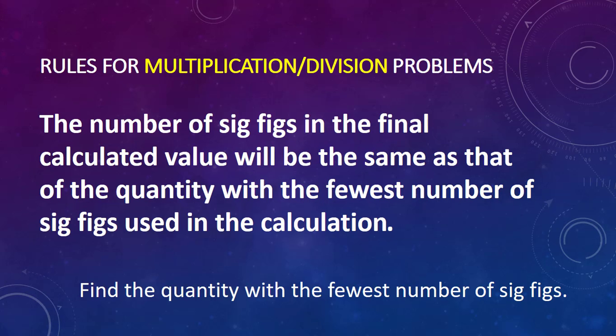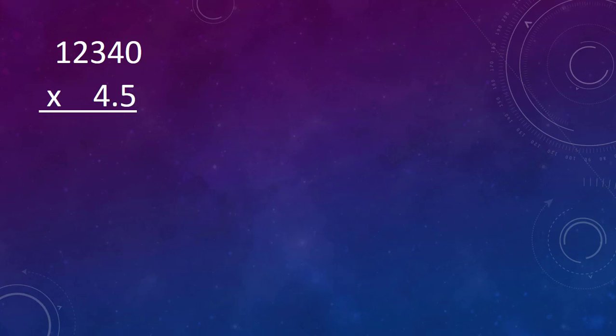For multiplication and division, it's a little bit different. The number of significant figures in our calculated answer will be the same as that of the lowest number of significant figures in our original numbers. Take 12,340 times 4.5 — the calculated answer is 55,530. 12,340 has four significant figures and 4.5 has two, so we want to round our answer to two significant figures. 55,530 rounded to two significant figures will be 56,000.